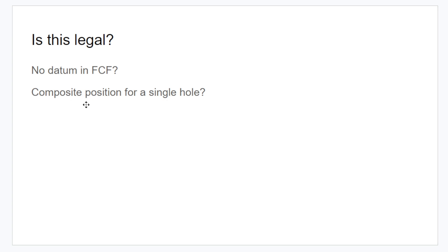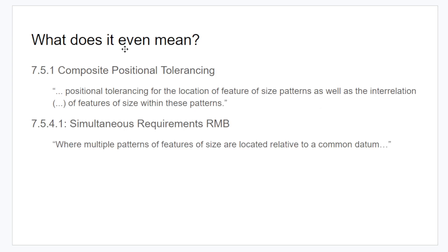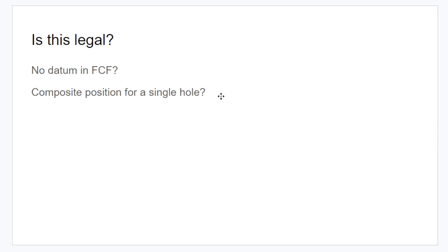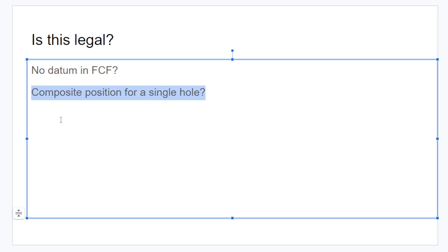The second thing that jumped out to me was the use of a composite positional tolerance for a single hole. And I'm going to say that this is probably a no-go because you can see the composite positional tolerancing, it says to locate a feature of size patterns. So it refers to patterns. It doesn't refer to individual features. So, I think this might be a bit of a no-go. However, I think if I were to see this, there is a way that we can interpret it, and I'll go to that now.